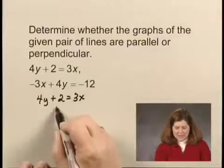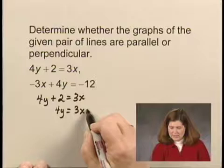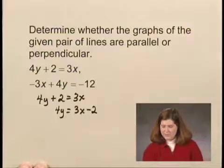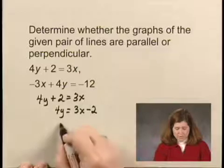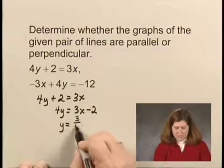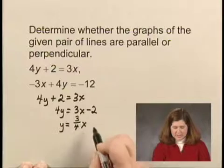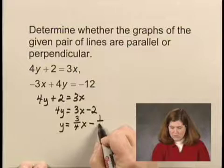Subtracting 2 on both sides, I have 4y equals 3x minus 2. And then dividing on both sides by 4, I have y equals 3 fourths x minus 1 half.